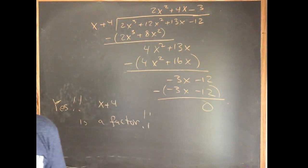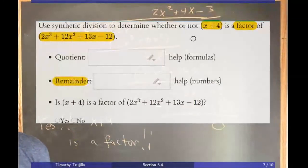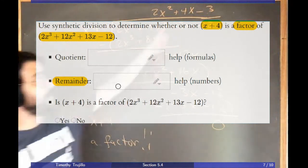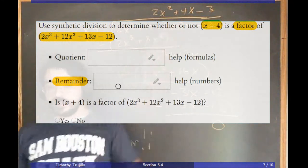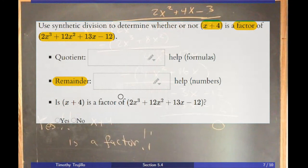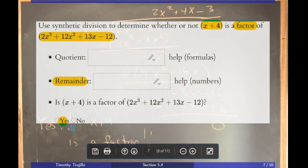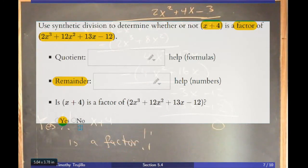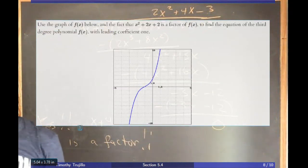Since the remainder is zero, yes — x+4 IS a factor of 2x³ + 12x² + 13x − 12. The quotient is 2x² + 4x − 3. On the homework platform, you enter 0 for the remainder, the quotient expression, and mark 'yes' for whether it's a factor.